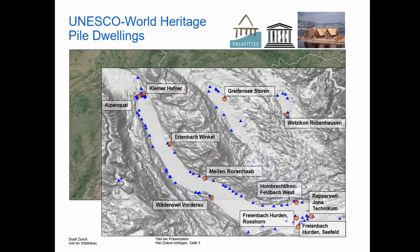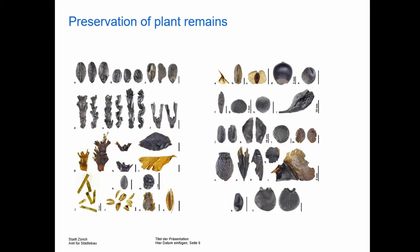In 2011, 111 of those sites were selected as UNESCO World Heritage. In the canton of Zurich, seven of these were included, which is quite interesting because it is one of the only UNESCO World Heritage sites that nobody can see — a hidden, sunken, and forgotten part that we are trying to present again.